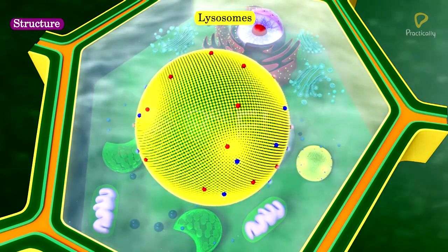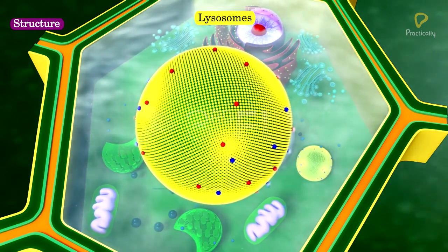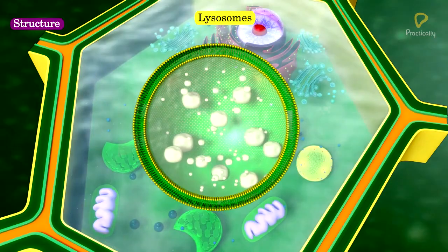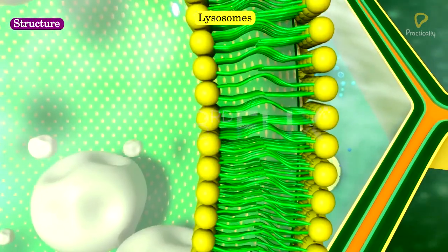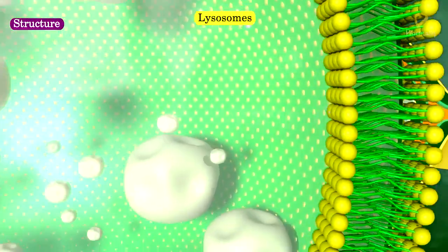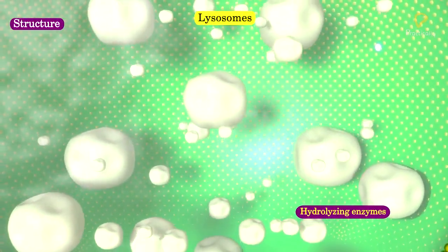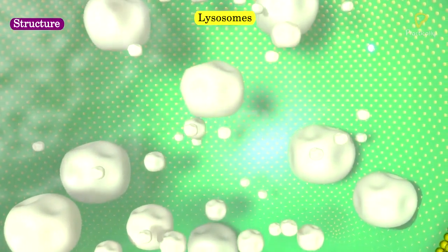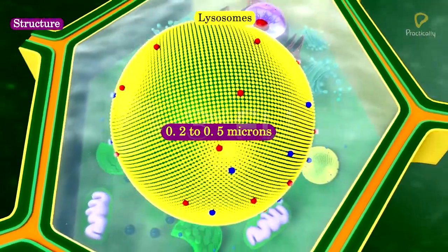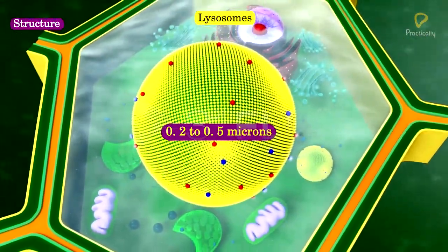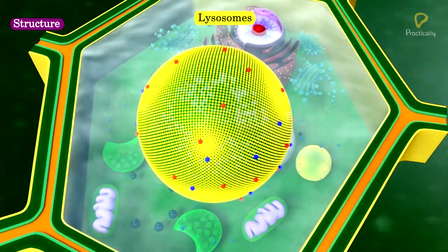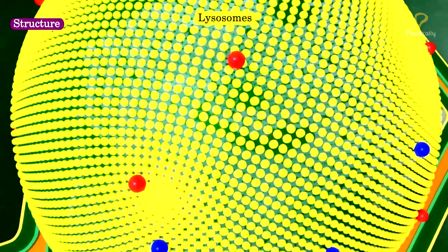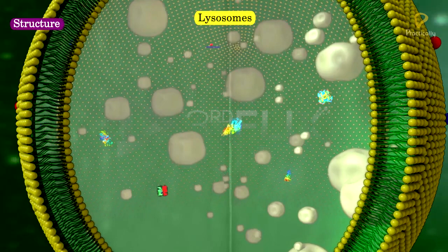Lysosomes are round vacuolar structures. They are surrounded by a single unit membrane and are filled with hydrolyzing enzymes. Lysosomes are 0.2 to 0.5 microns in size. Lysosomes may contain all types of hydrolytic enzymes like lipases,